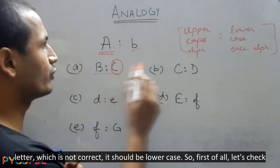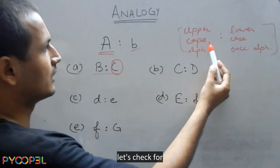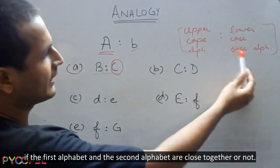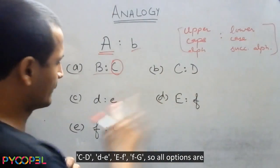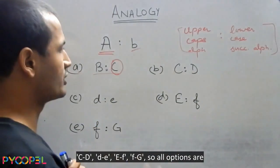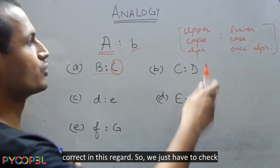So, first of all, let's check for first alphabet and the second alphabet are close together or not. C, D, D, E, E, F, F, G. So, all options are correct in this regard.